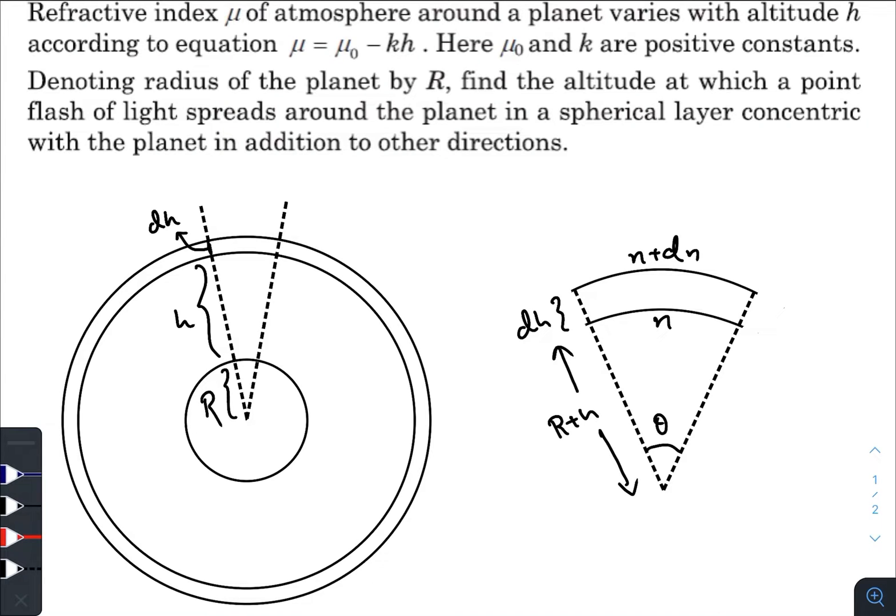Now I have just taken a small portion of the beam and I zoomed this portion here. The variation of the refractive index is n and it increases to n plus dn, and the thickness is dh. As you can see the wave front is something like this.